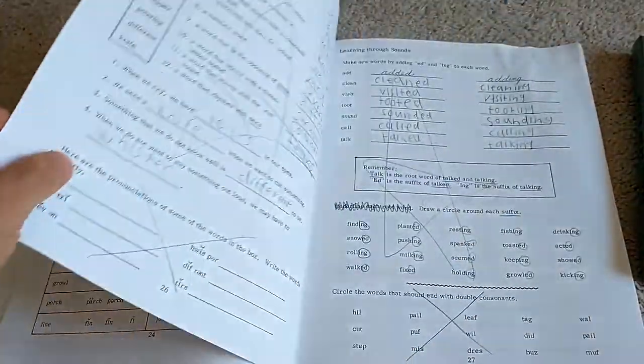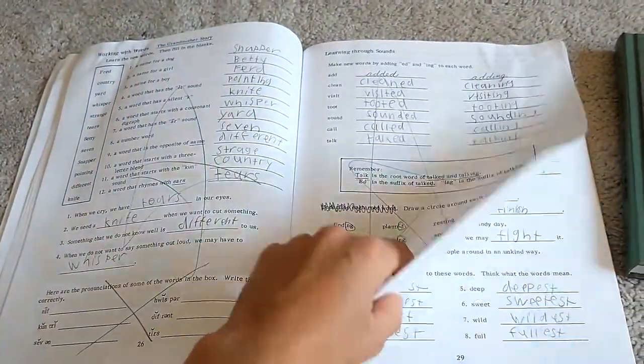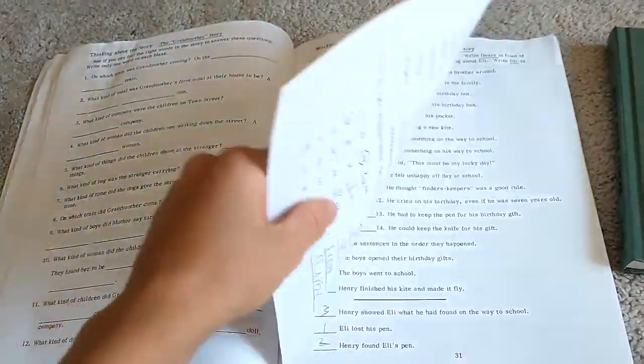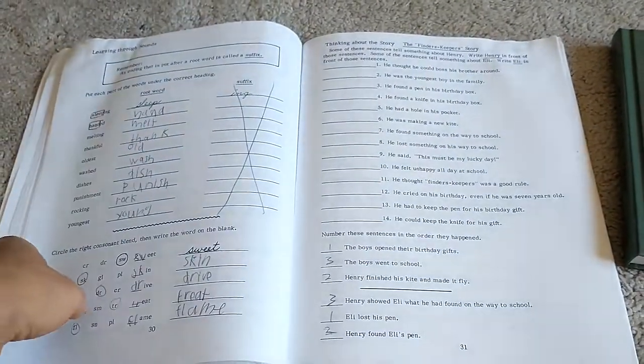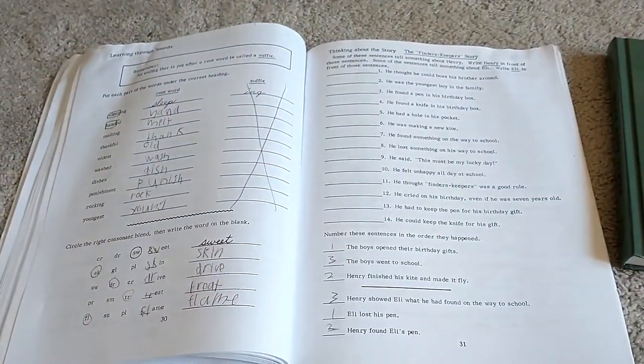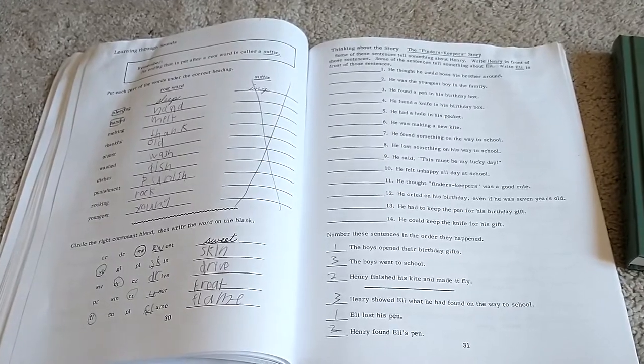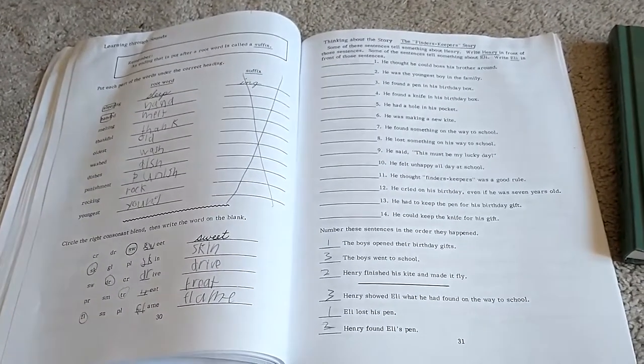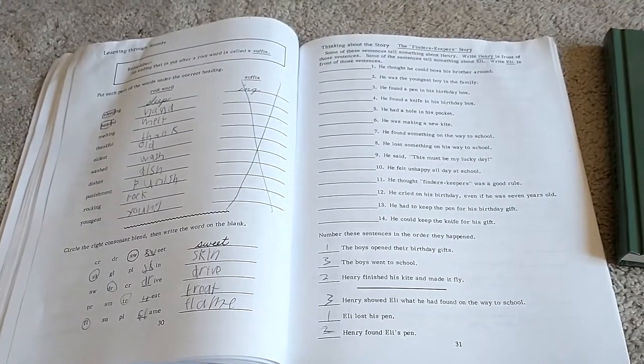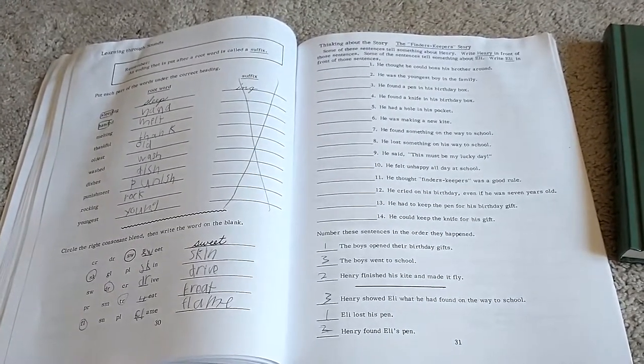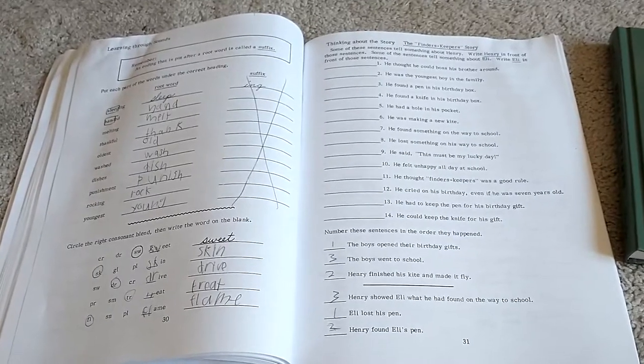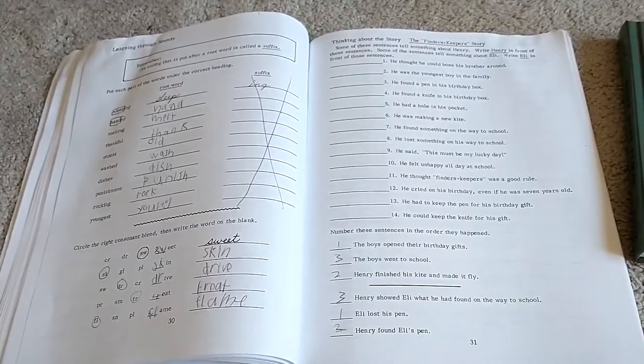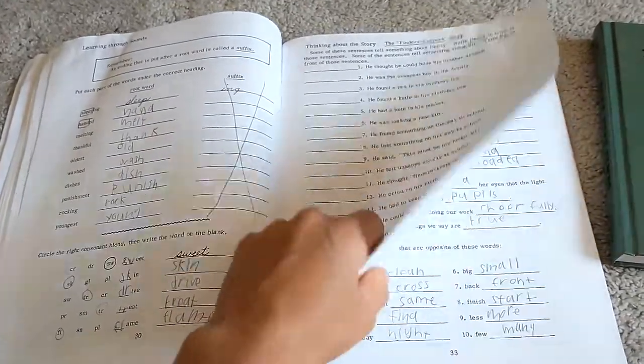My only thing that I didn't love is I felt like there was not any critical thinking questions. The questions that were asked for the comprehension were pretty basic—all of them could be found in the book. You're not thinking outside the box, you're not inferencing. I know this is second grade, but you still can do that at a basic level to have higher-order thinking. So I felt like I needed to read the stories with her so I could ask her some more critical thinking questions at the end.